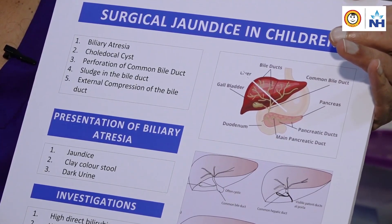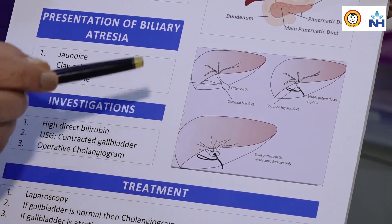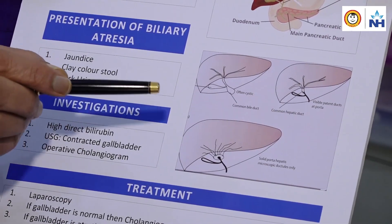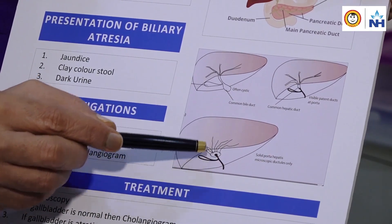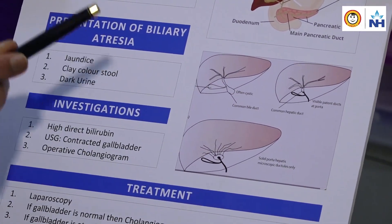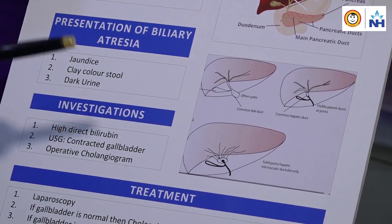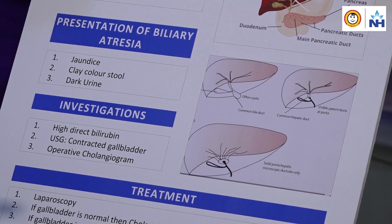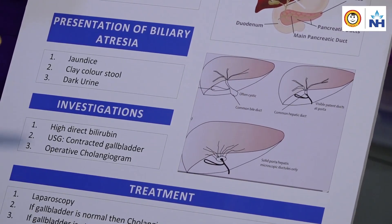What is biliary atresia? The extra-hepatic bile duct, and in some cases intra-hepatic bile ducts, become atretic. This is a classical view where the extra-hepatic bile ducts, intra-hepatic ducts, and gallbladder have all become atretic or very small. Because of that, bile formed in the liver is not able to go into the duodenum, resulting in jaundice, clay-colored stool, and dark urine — the classical features of biliary atresia.